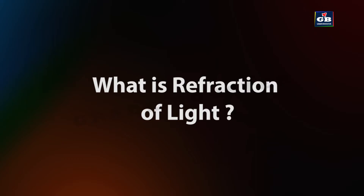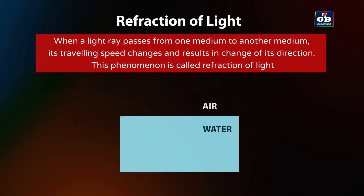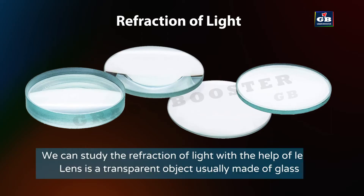What is refraction of light? When a light ray passes from one medium to another medium, its traveling speed changes, which results in a change of its direction. This phenomenon is called refraction of light. A straw in a glass appears to be bent — this is due to refraction of light.